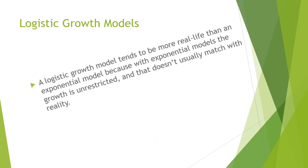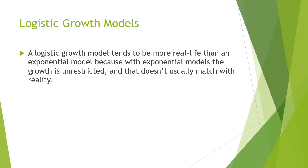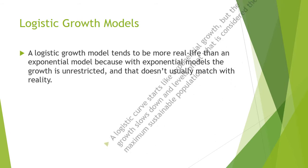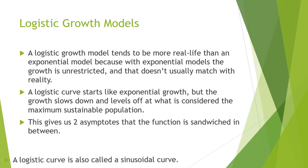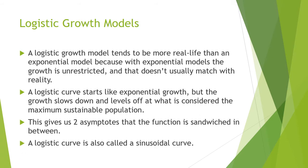The population is going to level off in response to what the environment can provide. They tend to be more real life than an exponential model, because exponential models of growth is unrestricted. A logistic curve starts like exponential growth, but then slows down and levels off into what is considered the maximum sustainable population. It gives us two asymptotes, and this function is sandwiched in between them. A logistic curve is also called a sinusoidal curve.